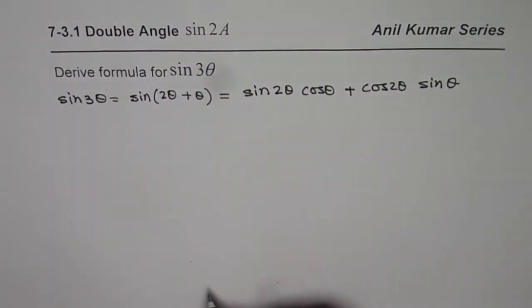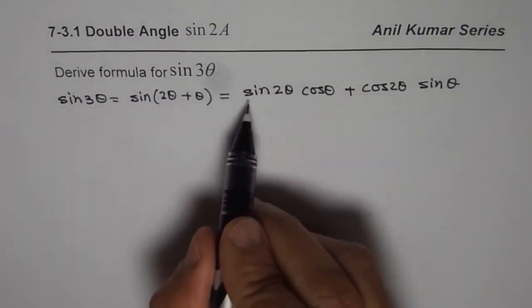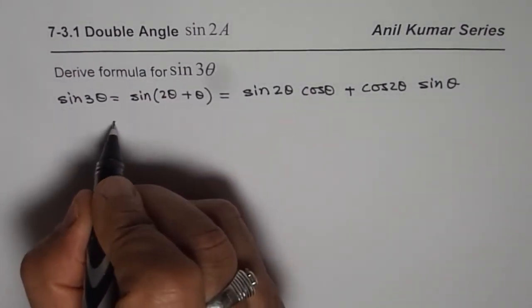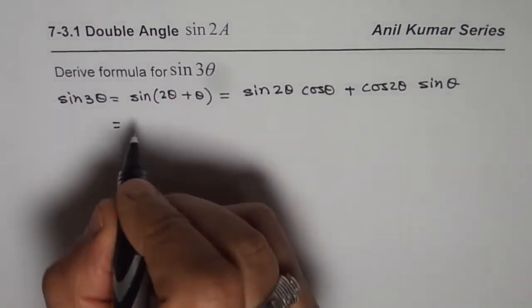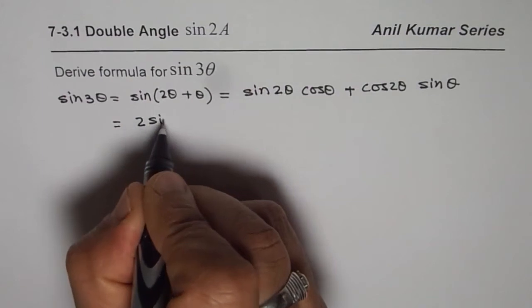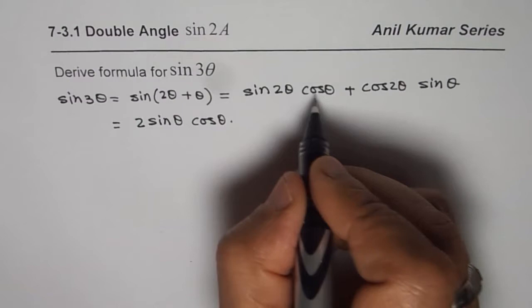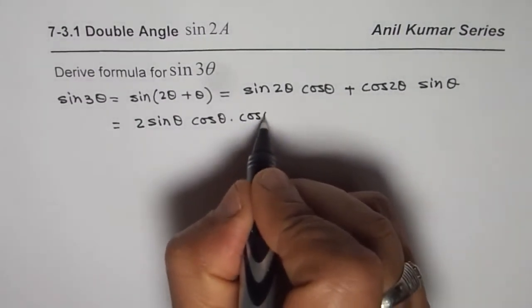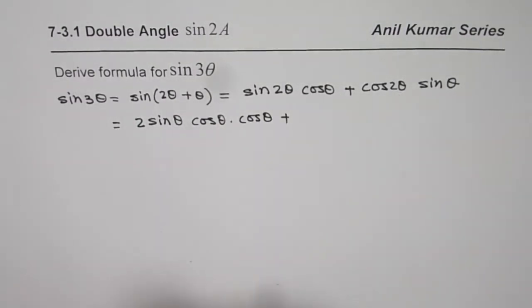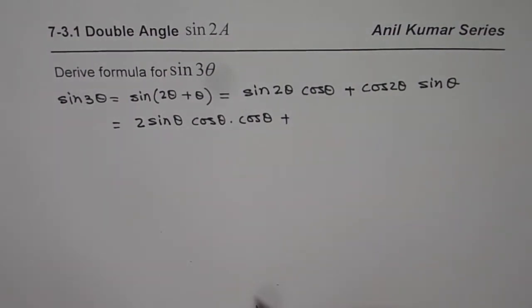Now we know what sin 2θ is. Sin 2θ is 2 sin θ cos θ, and then we have cos θ. Plus cos 2θ. Now for cos 2θ, you could write cos² θ minus sin² θ.